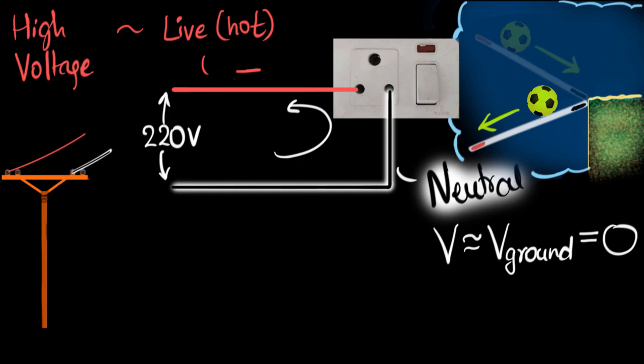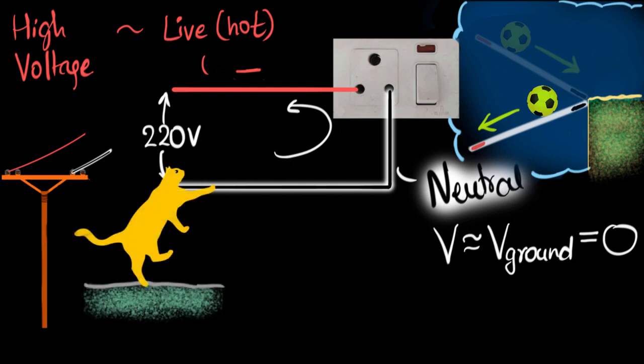So what does that mean now? This means that if a cat comes and touches this neutral wire, and let's say the insulation is broken, then what's gonna happen to that cat?